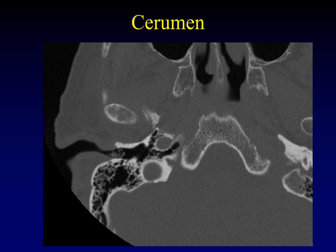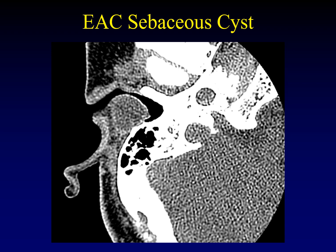Impacted cerumen is by far the most common thing we'll encounter in the external auditory canal. The bubbly gas that forms within cerumen is the clue, and the fact that it's not adherent to any of the walls of the external auditory canal — unless it gets packed down with a Q-tip. Here's an example of a cutaneous lesion arising in the skin of the external auditory canal. This large cystic structure is in the cartilaginous, more lateral portion of the canal — a uniform cyst that turns out to be just a sebaceous cyst.